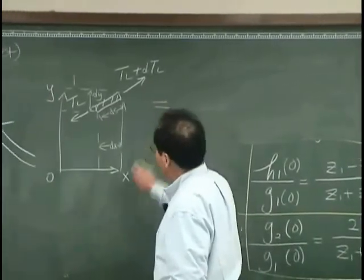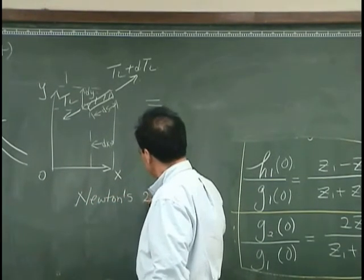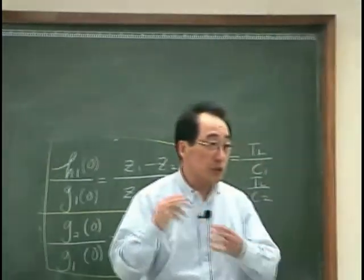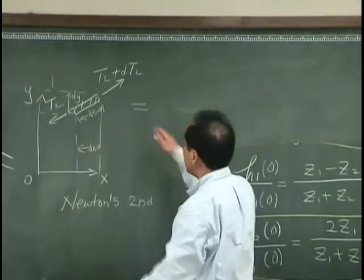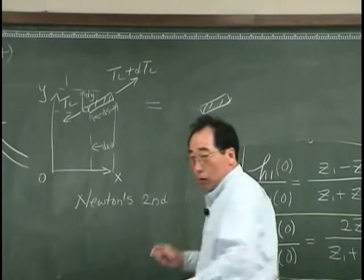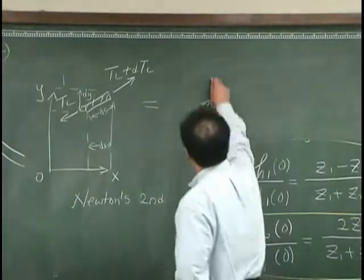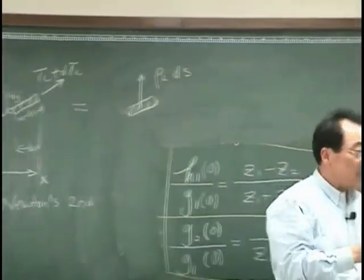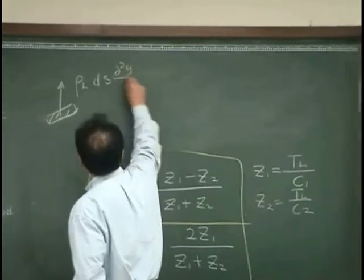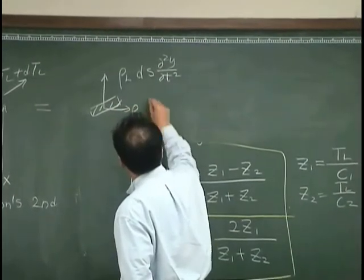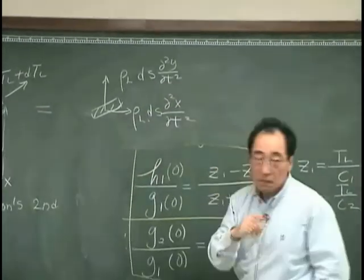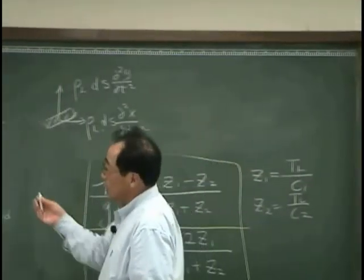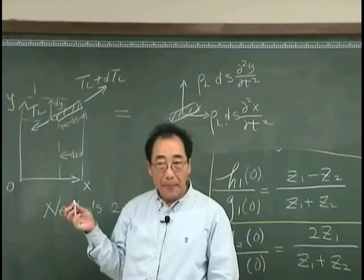And then Newton's second law says that any unbalanced force induces motion, and this unbalanced force has to be equal to mass, that is rho L ds. Rho L is mass per unit length, ds is the length. And I would say that's the Newton's second law I applied to the infinitesimal element of a string.